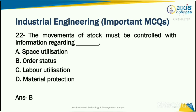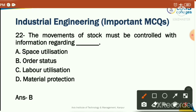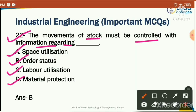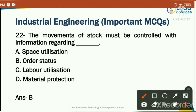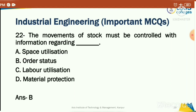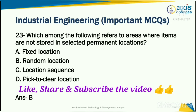The movement of stock must be controlled with information regarding: space utilization, order status, labor utilization, or material protection. The correct answer is option B: order status — stock movement must be controlled with information regarding order status, i.e., how many orders and what is their current status.